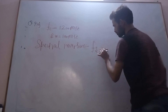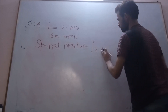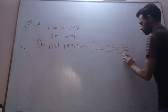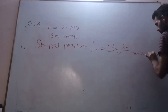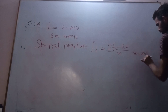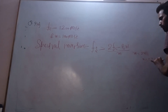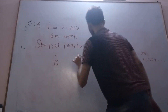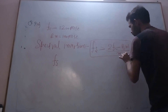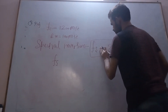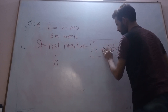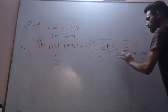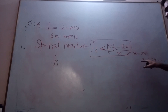Spectral inversion occurs when the sampling frequency is greater than or equal to 2fc minus bandwidth divided by m, where m is equal to 2n — meaning m is an even number. To avoid spectral inversion, the sampling frequency should be less than 2fc minus bandwidth divided by m, where m = 2n and n = 1, 2, 3, 4, and so on.